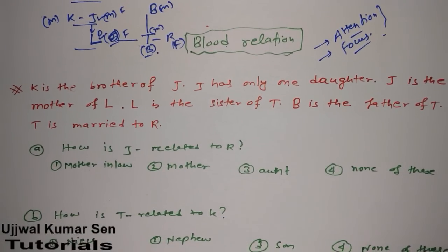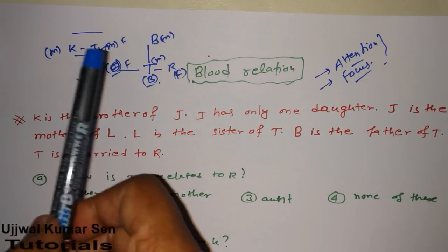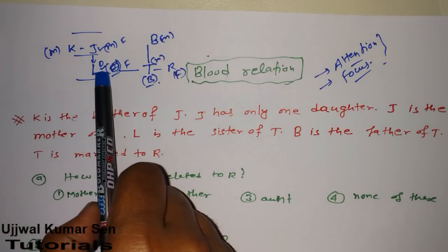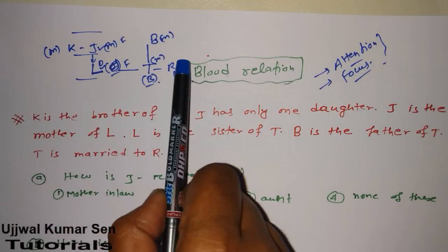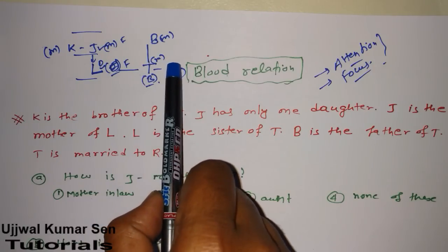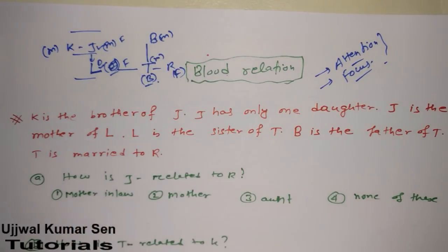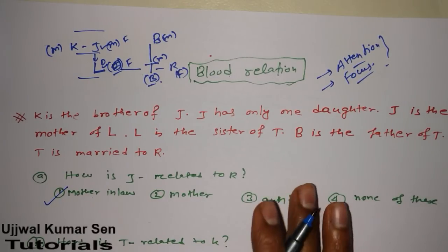Based on this question and the relations I have just created, you can see this diagram. Using this diagram, we can solve questions quite easily. Right now we have two questions in front of us. First question is: how is J related to R? You can see here — L is daughter of J, T is son of J, and R is wife of T. That means J and R's relationship is mother-in-law. So the first option is the right answer. If you did not get it, repeat and watch it again — I am sure you will get it.